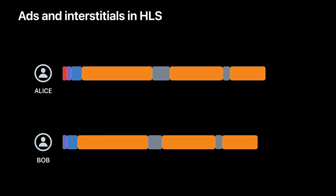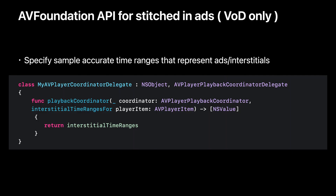So going back to the content described earlier, how do we define these time ranges that are to be left out of the coordinated playback timeline? For instance, the statutory warning is something that only Alice has and Bob doesn't. And it's also possible that the ad breaks are of different durations. You might be aware that HLS offers two ways of scheduling ads, one of which would be to directly stitch in the ad segments into the primary content's playlists. So for video on demand content that has ads stitched in using discontinuity tags, you can set the ad time ranges on the AVPlayerPlaybackCoordinator using an AVFoundation API. We've added a delegate method using which you can specify an array of sample accurate time ranges that represent ads and interstitials in the content. The AVPlayerPlaybackCoordinator would then use this information to coordinate playback across the group.